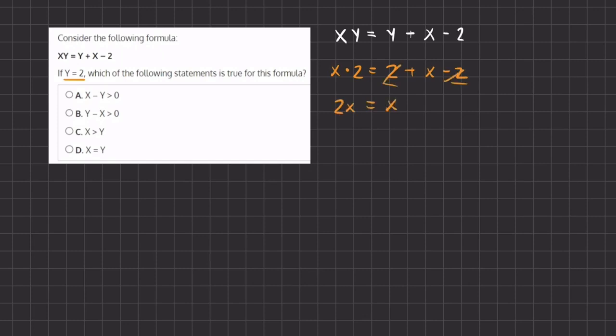So now let's move the x's to one side. We can subtract x on both sides and we are left with 2x minus x, which is just 1x, equals x minus x, which is 0. So the value of x is 0 when the value of y equals 2.